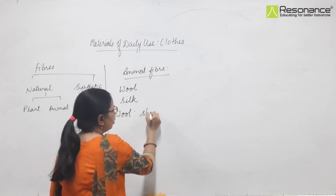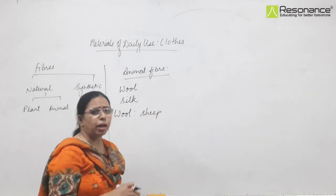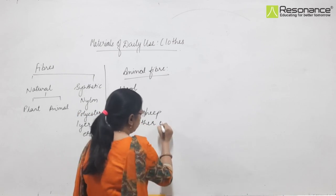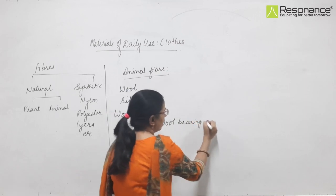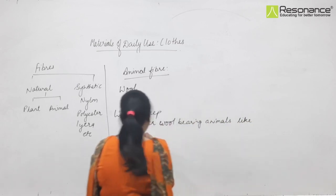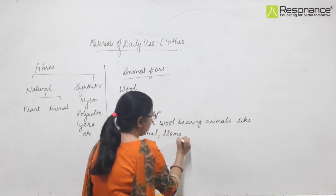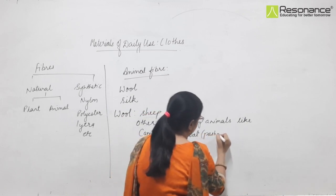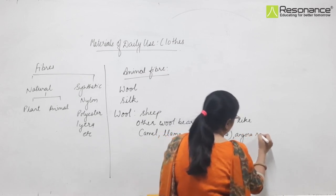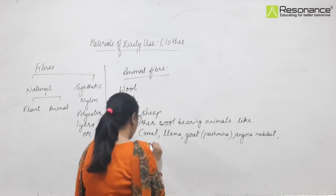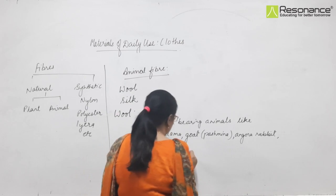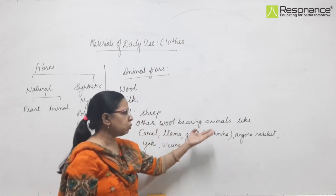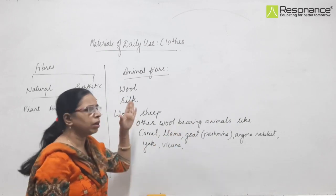If we talk about animal fibers, there are two major ones: wool and silk. Wool is obtained from the animal sheep, but sheep is not the only wool-bearing animal. There are many others like camel, llama, pashmina goat, angora rabbit, yak, and vicuna. Very fine quality wool is obtained from goat and angora rabbit. Sheep of course is the main wool-bearing animal.